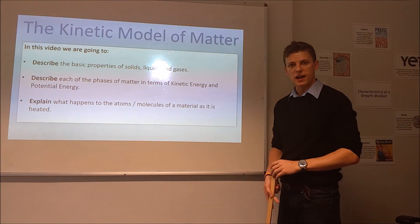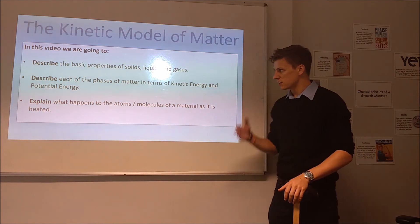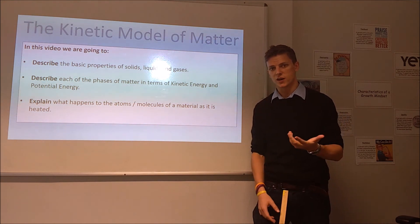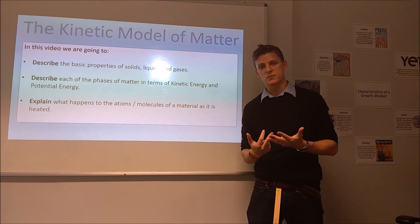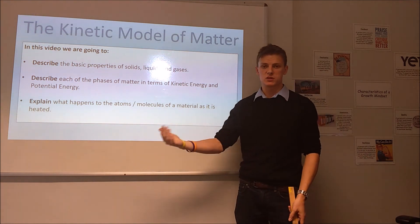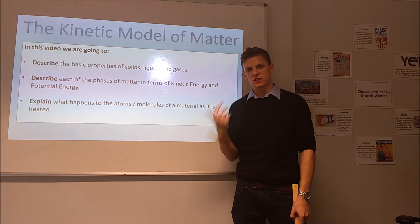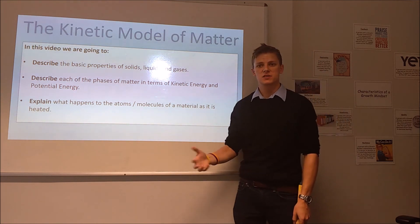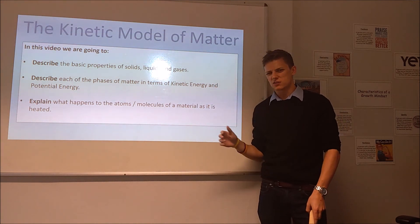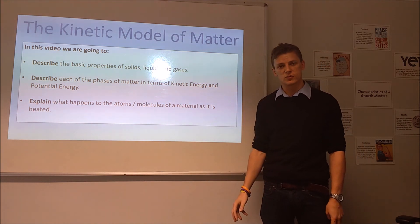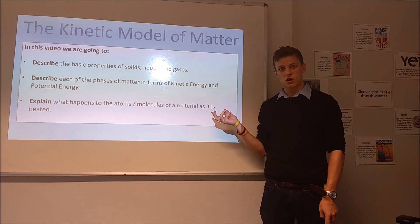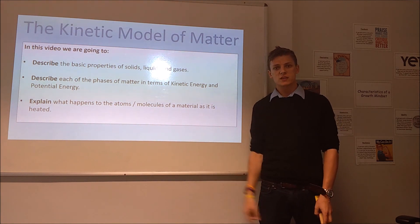To quickly recap the things you should take away: you should be able to describe the basic properties of solids, liquids and gases in terms of their arrangement — whether random or organised — and how fast the particles are travelling. You should also be able to explain in terms of kinetic and potential energy. Lastly, you should be able to explain what happens as we heat up or cool down the material, and mathematically model it using specific heat capacity, specific latent heat of fusion, and specific latent heat of vaporization. If any of those things are unclear, please go back to the appropriate section in this video or look it up in your textbook. Feel free to comment below with any questions.